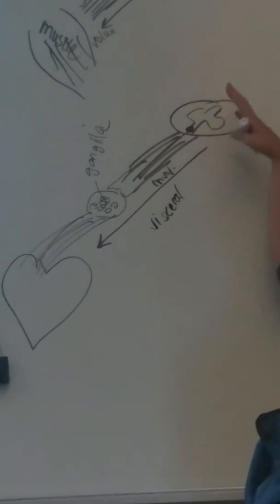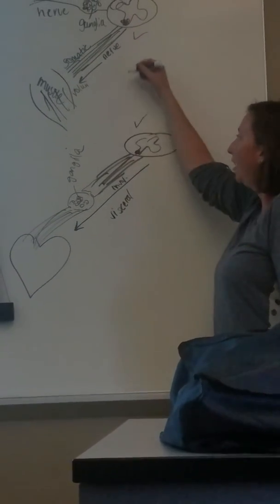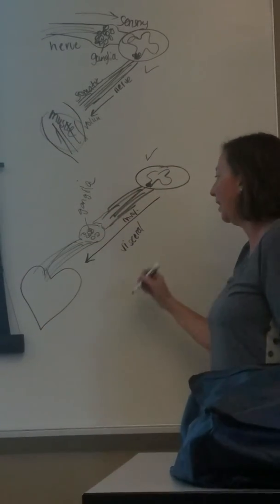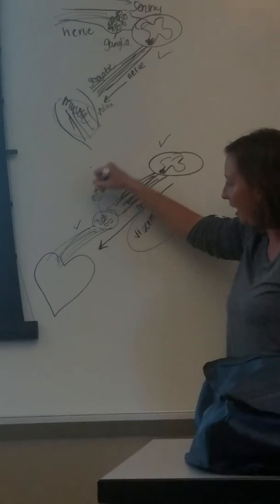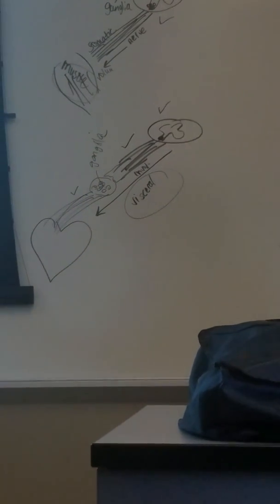So a couple things going on here. It's still a motor pathway because it's exiting at the front of the spinal cord. But if it's voluntary, we're going to the skeletal muscle. We call that somatic. If it's involuntary, it's visceral to the internal organ. And we have two different nerves or axons, however you want to think of it.